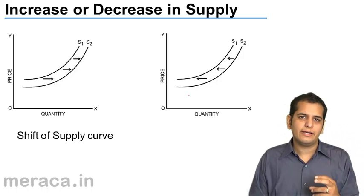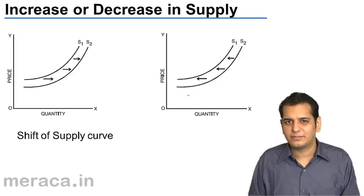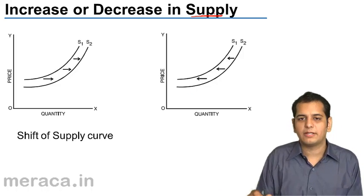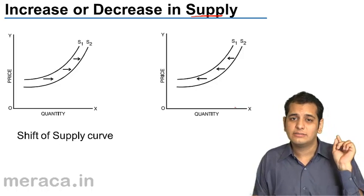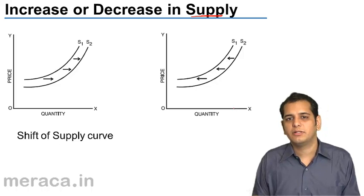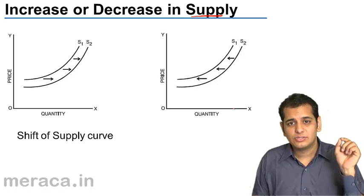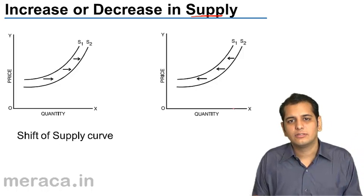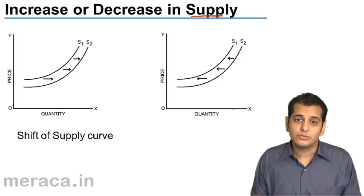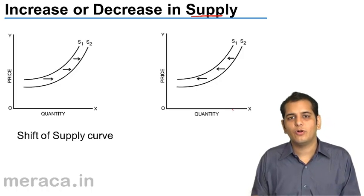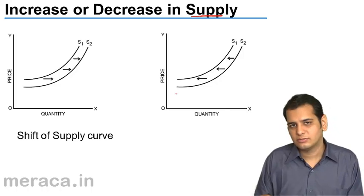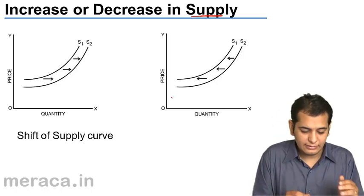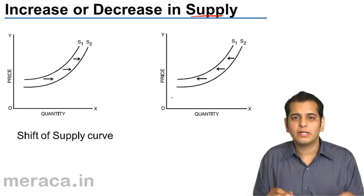When the supply is changing because of other factors, we call it a change in supply. When the supply changes because of other factors — like technology, like taxes, like prices of other goods — we call it a change in supply. What happens is, when the supply changes because of other factors, the supply curve altogether shifts.